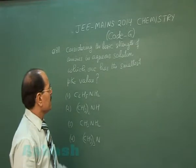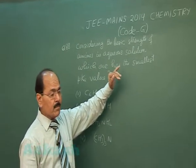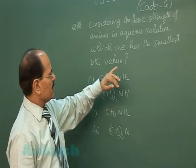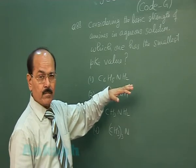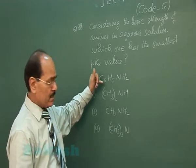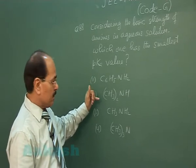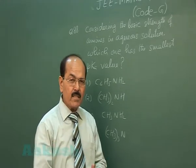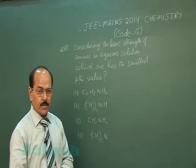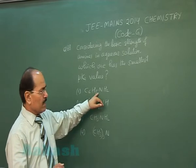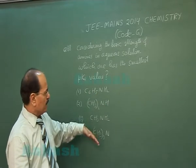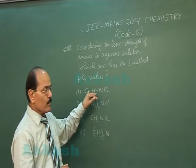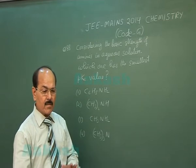Question number 88 says: considering the basic strength of amines in aqueous solution, which one has the smallest pKb value? The four options given are aniline, dimethylamine, methylamine, and trimethylamine. Comparing basic strength in aqueous solution, aromatic amine is less basic than aliphatic amine because the lone pair of electrons at nitrogen is delocalized with the benzene ring, so its availability is partial.